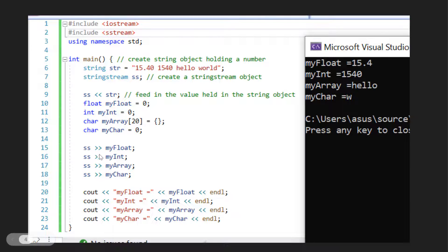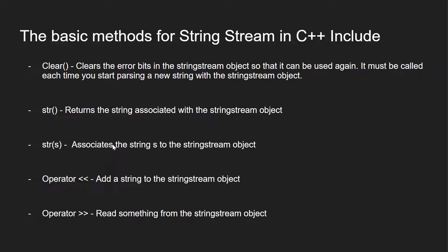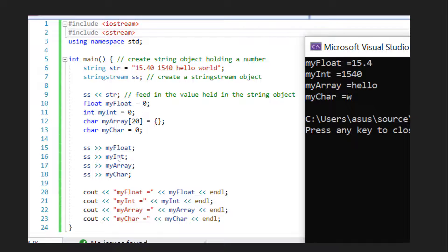And then what we're doing here is we're using the right-hand operator as I talked about in the previous slide to read something from the string stream object. So these are now reading all the elements inside the str string here and that's assigning it to each variable which is declared here.